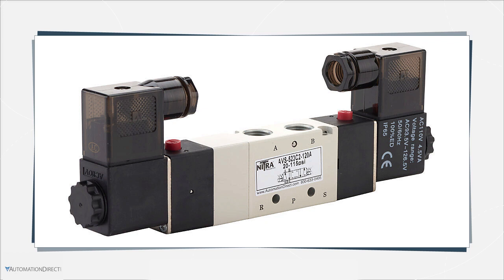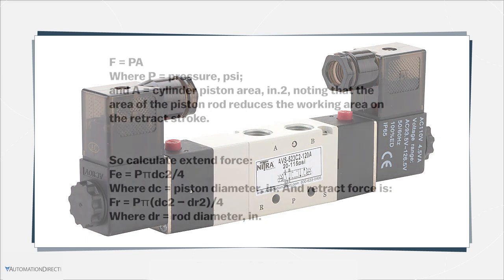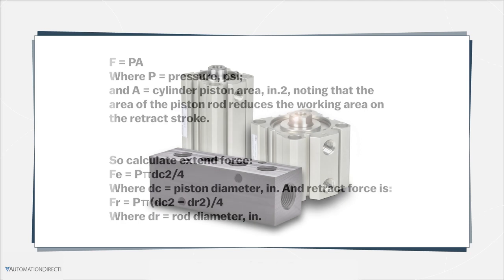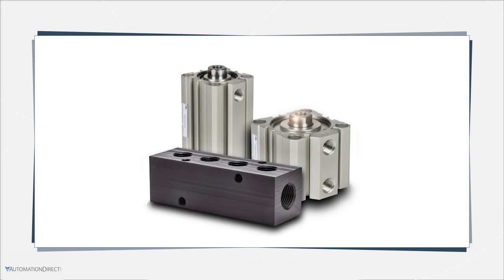The difference in pressure on the two sides of the piston results in a force equal to the pressure differential multiplied by the surface area of the piston. If the load connected to the rod is less than the resultant force, the piston and rod will extend and move the machine element.